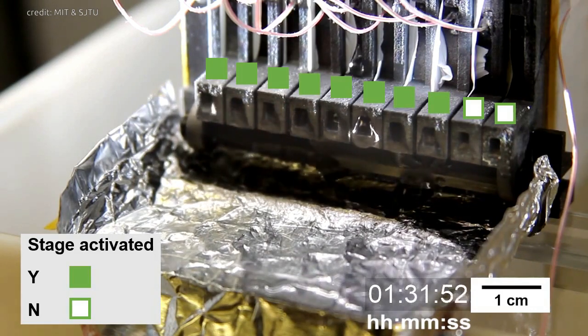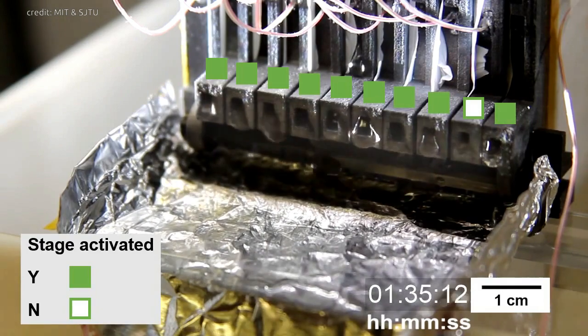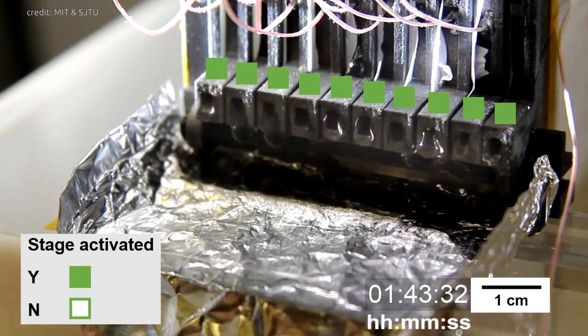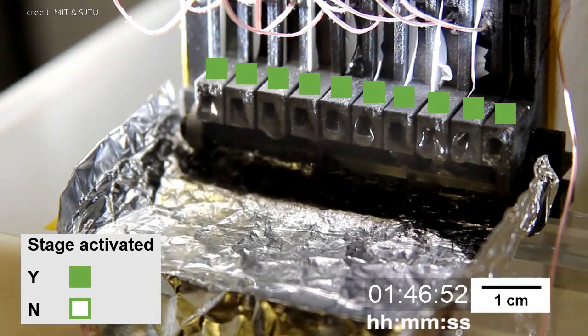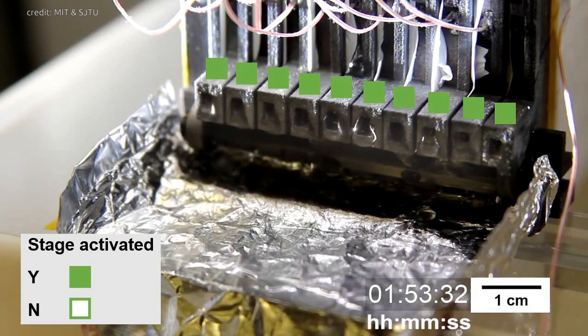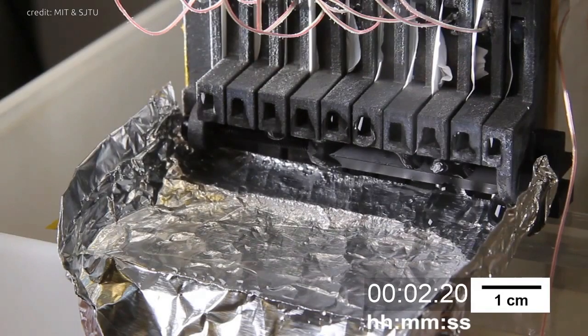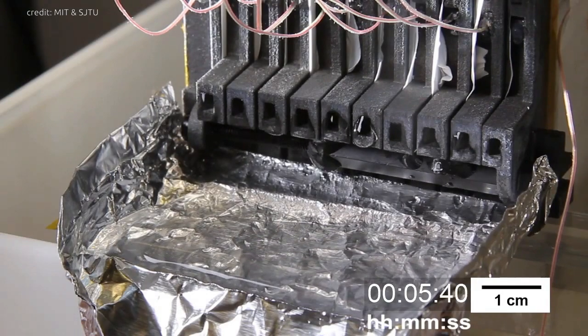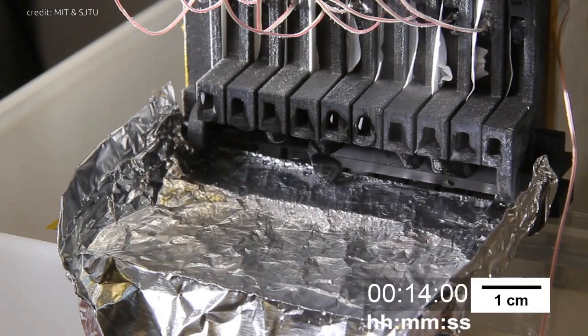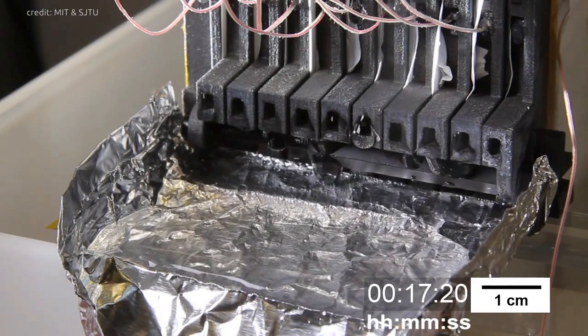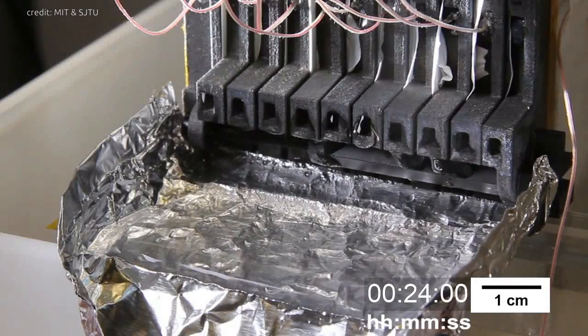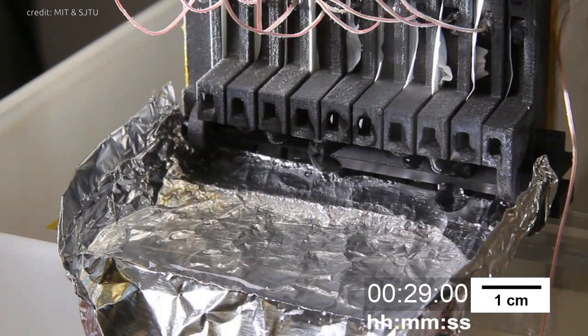Adding more layers increases the conversion efficiency for producing potable water, but each layer also adds cost and bulk to the system. The team settled on a 10-stage system for their proof-of-concept device, which was tested on an MIT building rooftop. The system delivered pure water that exceeded city drinking water standards, at a rate of 5.78 liters per square meter, about 1.52 gallons per 11 square feet of solar collecting area.